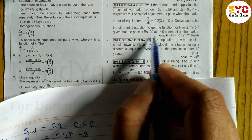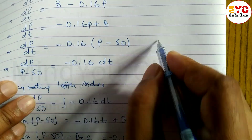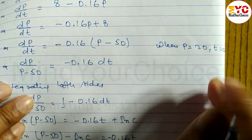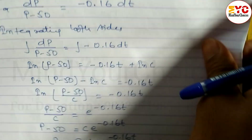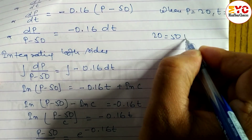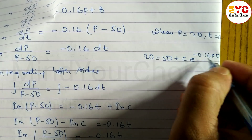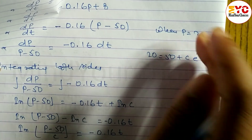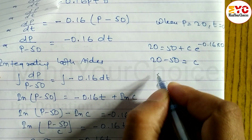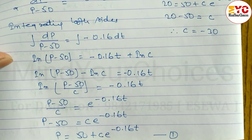Applying the initial condition: when p = 20 and t = 0, substitute into equation 1. We get 20 = 50 + c·e^0. Since e^0 = 1, we have 20 = 50 + c, therefore c = 20 − 50 = −30.